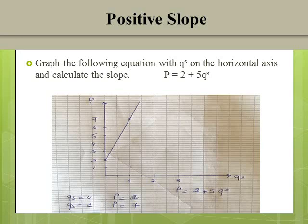I will plot the first point (0, 2) and the second point (1, 7), then sketch the line. The slope is positive because, first, the line is moving upward from the left to the right. Second, any increase in qs is leading to an increase in p.